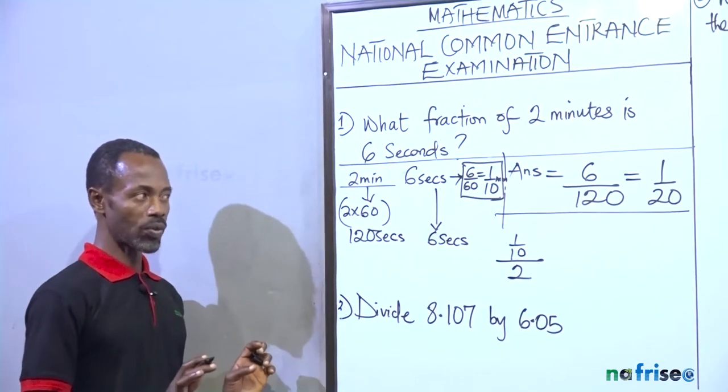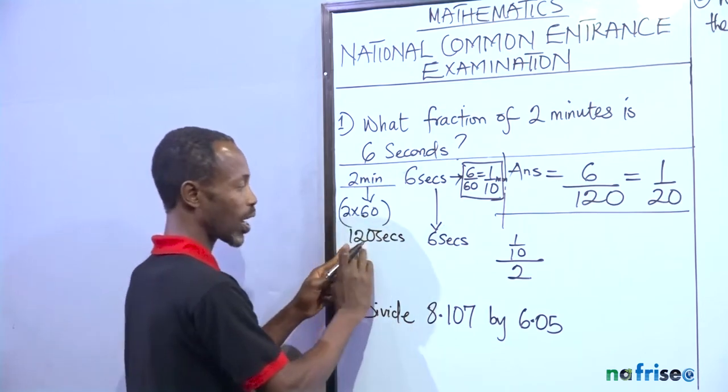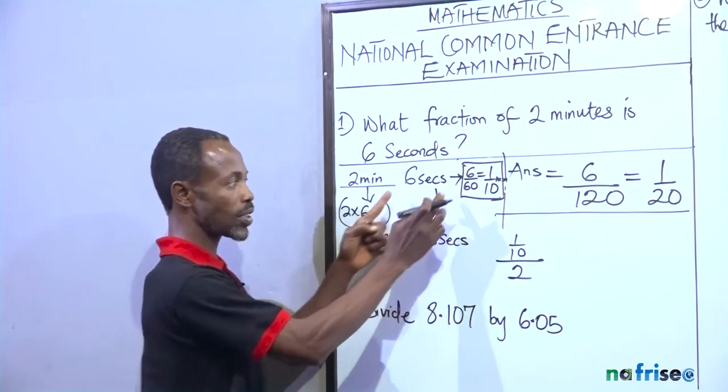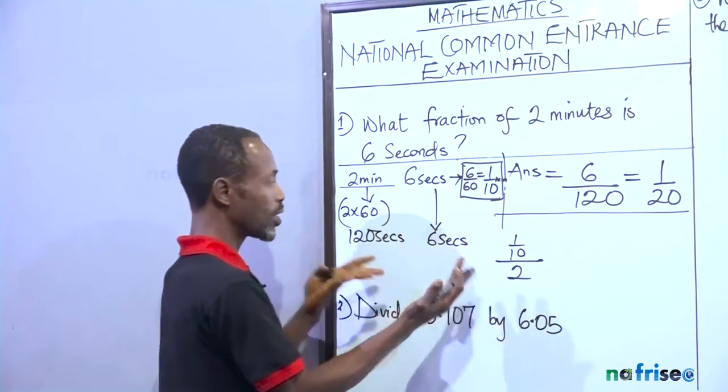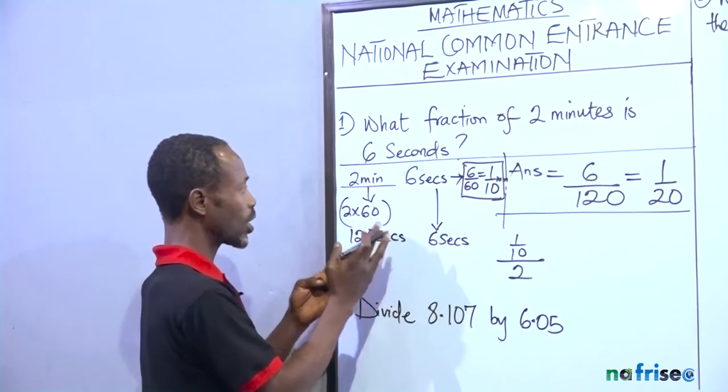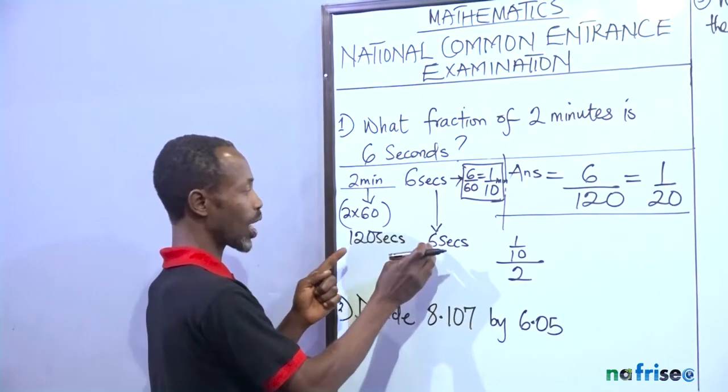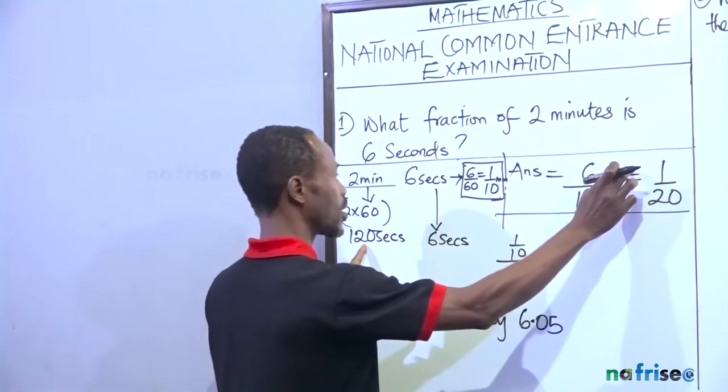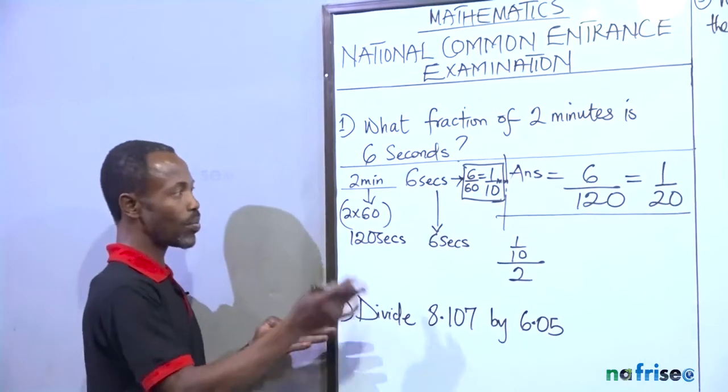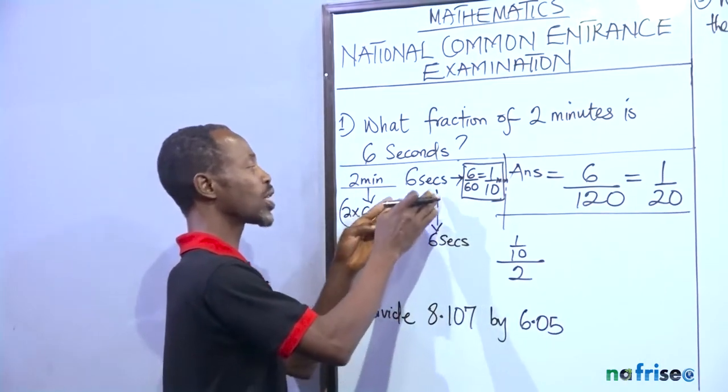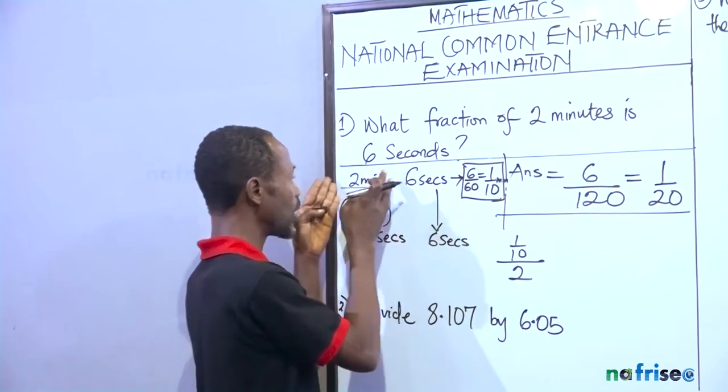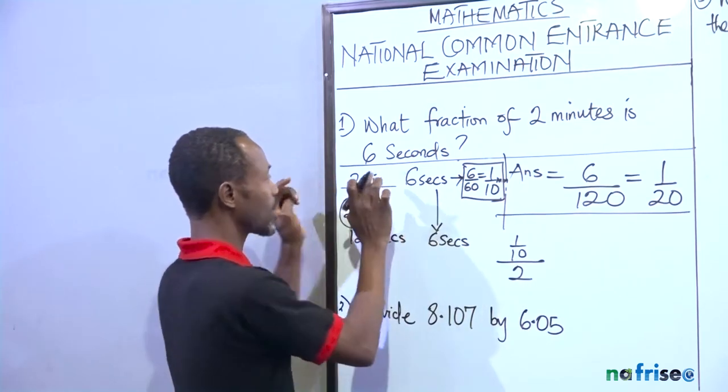This is the second way of solving it. The first step, I changed 2 minutes to seconds. It became 120 seconds. 6 seconds is still 6 seconds. So what's the fraction of 6 seconds in 2 minutes? It has to be 6 over 120. Now, the second method I'm saying is this: If you don't want to take the minutes to seconds,